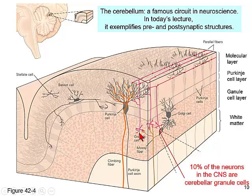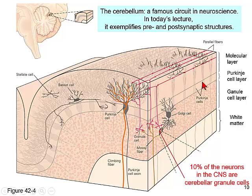The granule cells have dendrites locally and are located in the granule cell layer. There are also very few but very large cells — the Purkinje cells. The outer layer of the cerebellar cortex is called the molecular layer. In the old days with just light micrographs, all the little dots led people to call it molecular, meaning the smallest component.